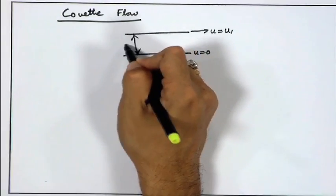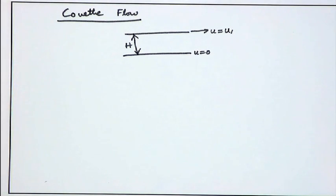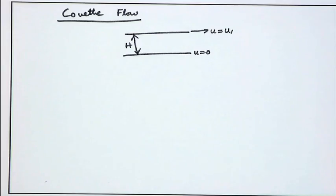The gap between the plates is small and the flow is fully developed. You may ask why we are studying this. Have you ever seen somebody pulling a plate on top of another plate? Very rarely. Even though you have a more practical situation of a pressure-driven flow — the Hagen-Poiseuille or plane Poiseuille flow — the flow between two parallel plates is plane Poiseuille flow that we have just studied. Then why are we studying this Couette flow?